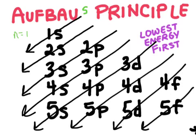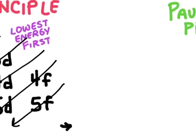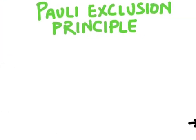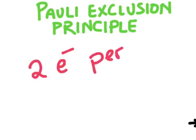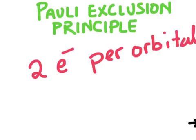So again, the Aufbau principle says electrons will go into the lowest energy orbital first. Let's go to our next rule here. It's called the Pauli Exclusion Principle. The Pauli Exclusion Principle is actually pretty simple. It just says that for every orbital, there could be a maximum of 2 electrons. So 2 electrons per orbital, that is the max. And you may remember, we've talked about this rule before, that they have to be having a different spin. So we'll have one with the upspin, we'll use these little half arrows here, and one with a downspin. So that's the Pauli Exclusion Principle.